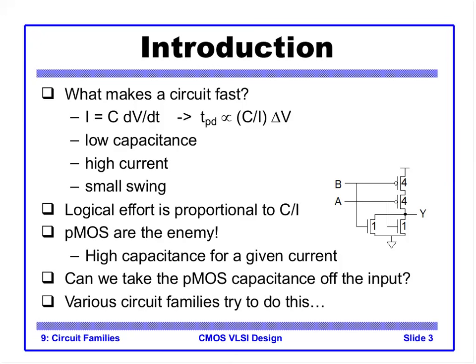Low capacitance makes the circuit faster because a smaller capacitance takes less time to charge and discharge. A small swing also helps — for example, going from 0 to 2 volts is comparatively faster than going from 0 to 5 volts. Logical effort is proportional to C/I, and propagation delay is proportional to C/I × ΔV.